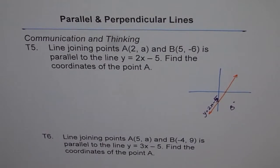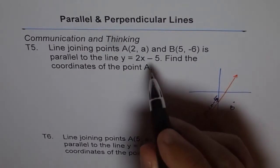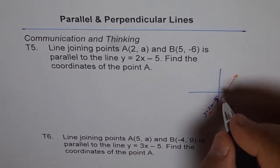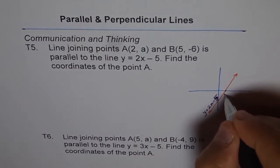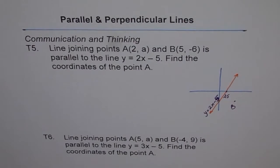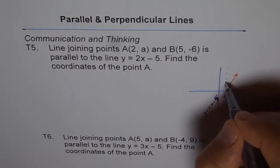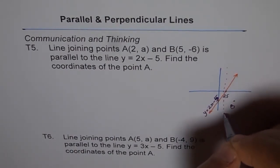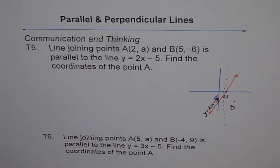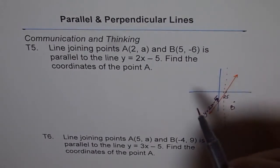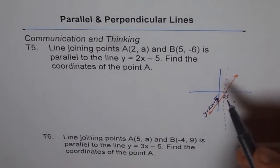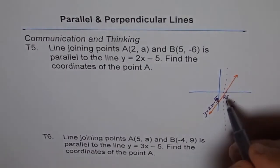Let me also find the x-intercept of this line. If y = 0 then x = 2.5, so that point is 2.5. When we say point A has x = 2, it will be somewhere here on this line but we don't know where — we need to find the y-value of A. We are given that the line joining (5, -6) and A is parallel to this line.